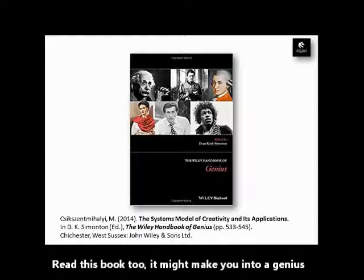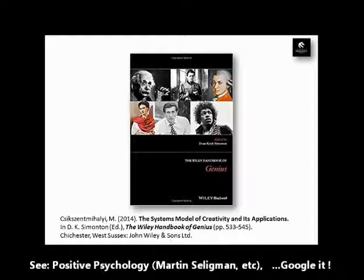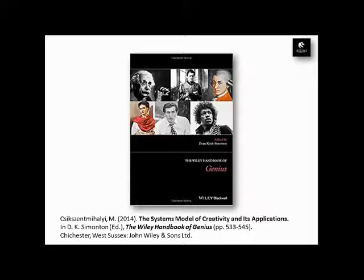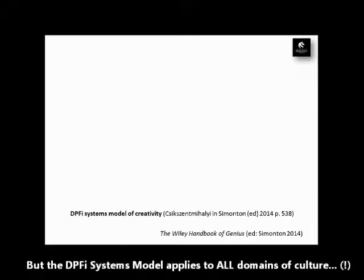It's chapter 25 or 35 or something, on pages 533 to 545, and it's a fascinating chapter about the Systems Model of Creativity and its real-world applications, and how that resulted in the Domain of Positive Psychology — I think Martin Seligman and Mihaly Csikszentmihalyi and people like that. Anyway, that's the model we'll be looking at today.